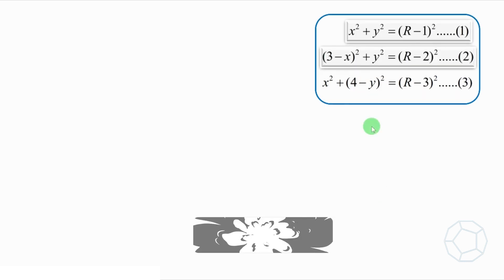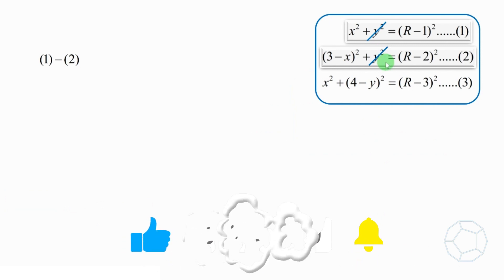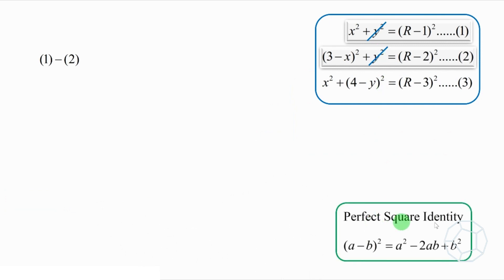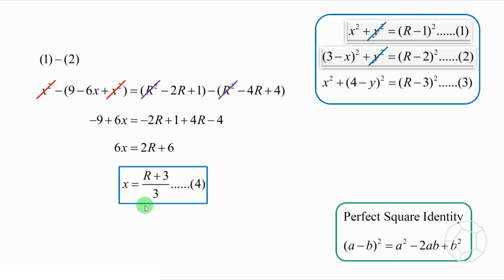Let's subtract equation 1 by equation 2 to get rid of Y. Using the perfect square identity, A minus B whole square is equal to A square minus 2AB plus B square. Then we get this. Cancel out the X square terms and R square terms on both sides. And make X as the subject of the equation. We have X is equal to R plus 3 over 3. We create equation 4.